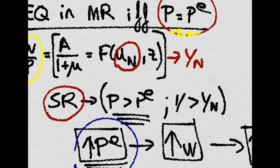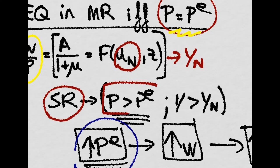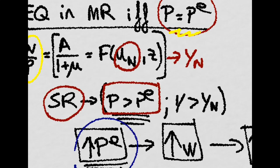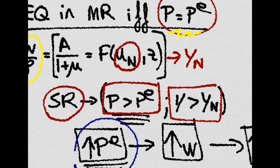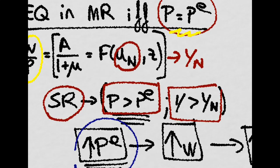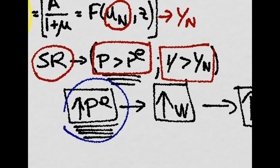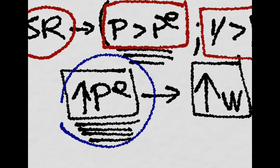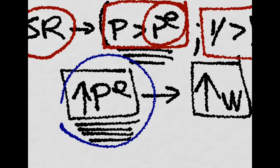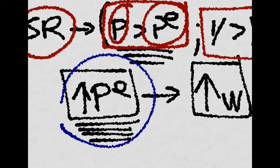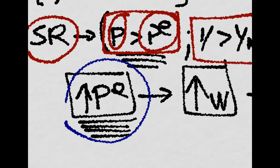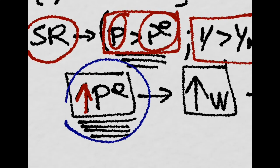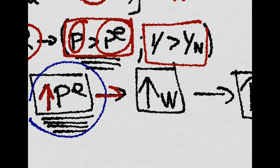And take that price level, current price level, is higher than the expected price level, and that the current output is higher than natural output. Well, if people were wrong, they expected the price to be lower than it actually is right now, then they will increase their expectations because they were wrong about their expectations previously.